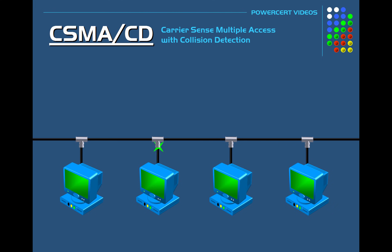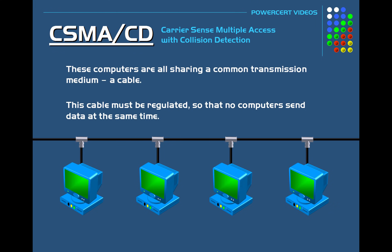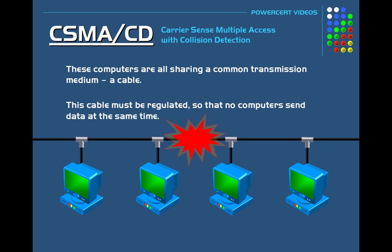As an example, here we have a network with four computers. These computers are all sharing a common transmission medium, which is a cable. This cable must be regulated so that no computers send data at the same time, which would result in a collision. When a collision happens, it causes data loss or data corruption.